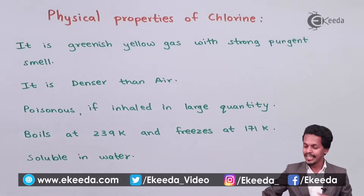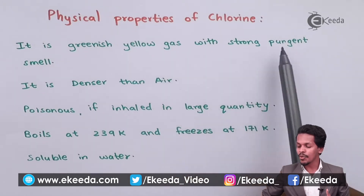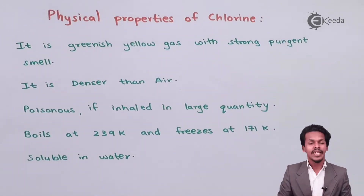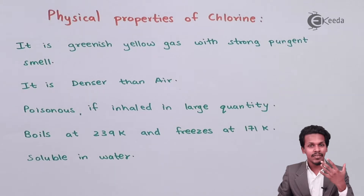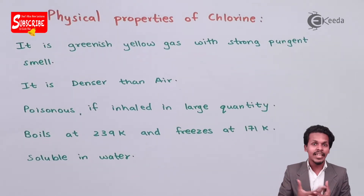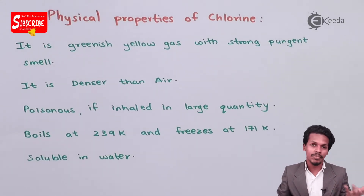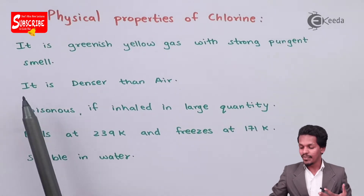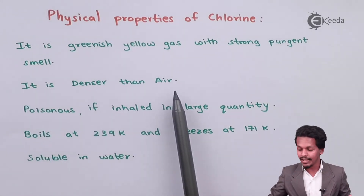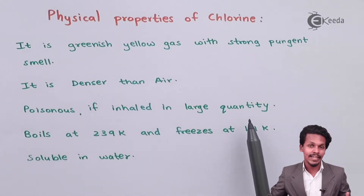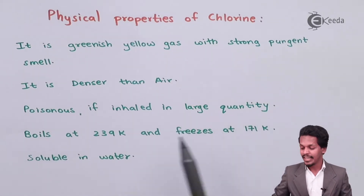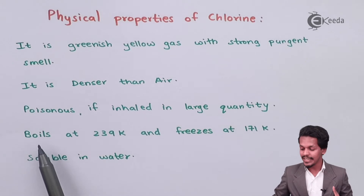The first property is that chlorine is a greenish yellow gas with a strong pungent smell. It is very suffocating and if inhaled in large quantities it is a poisonous gas. It is also denser than air.